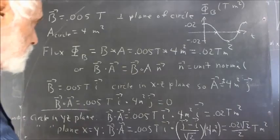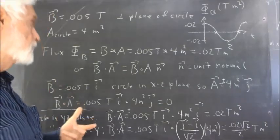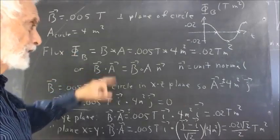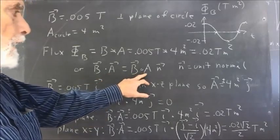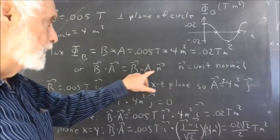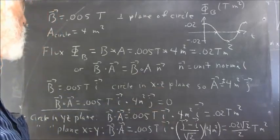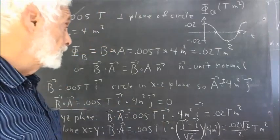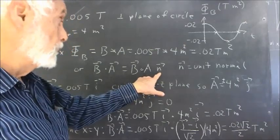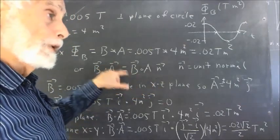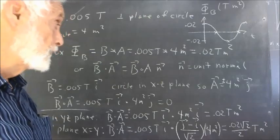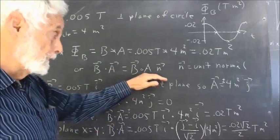We could also do that in a more general vector context. We take B⃗ dot A⃗ — the vector field times the vector area. The vector area is just the area times the unit normal vector, so we do the dot product of B⃗ with the area times the unit normal vector. If the magnetic field is perpendicular to the plane of the surface, then B⃗ dot the unit normal vector has a magnitude equal to the magnitude of the magnetic field. Depending on whether the field is in the same or opposite direction to the normal vector, we get a positive or negative result.